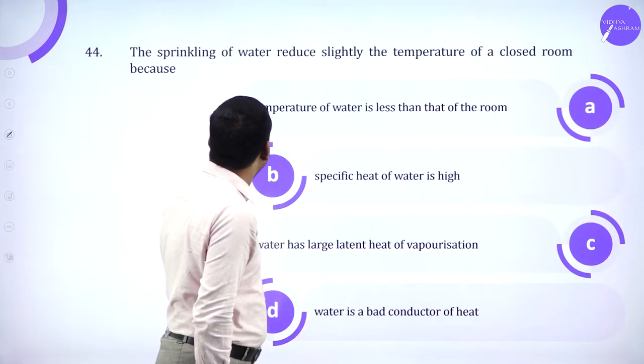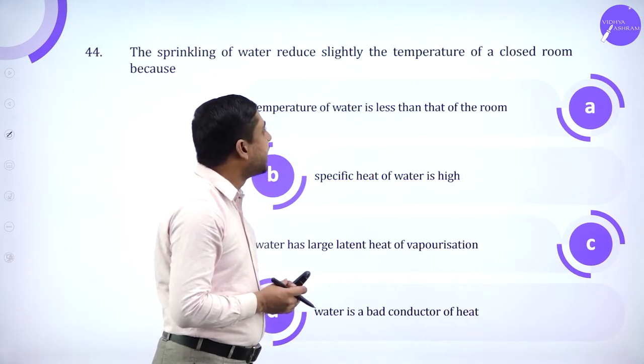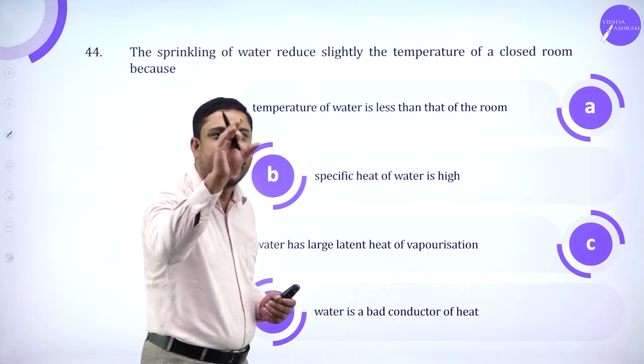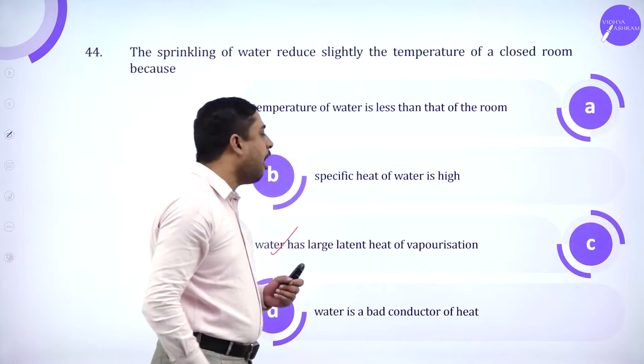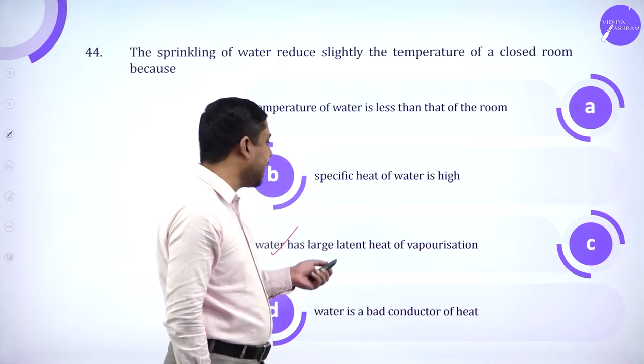The sprinkling of water reduces slightly the temperature of a closed room. When the temperature is very high we sprinkle water because water has large latent heat of vaporization.